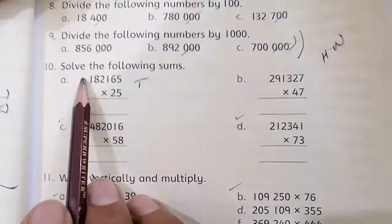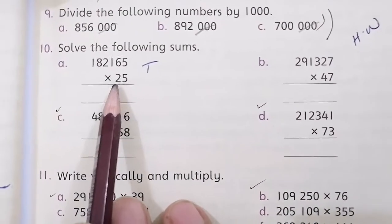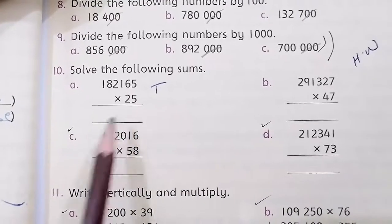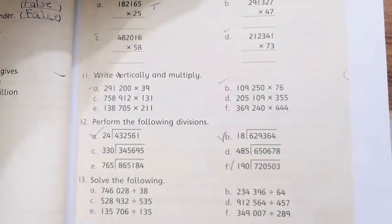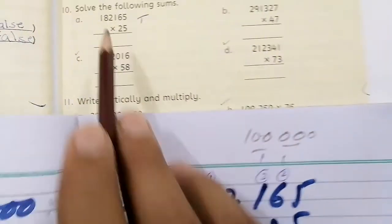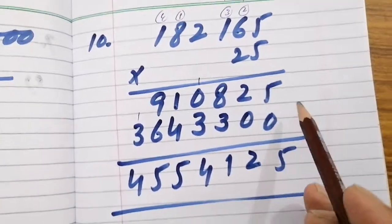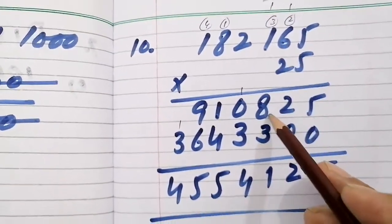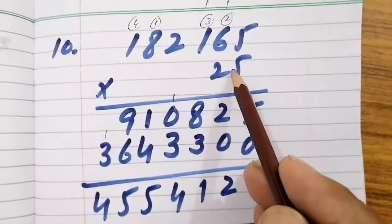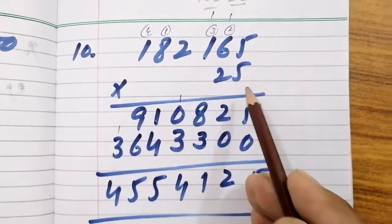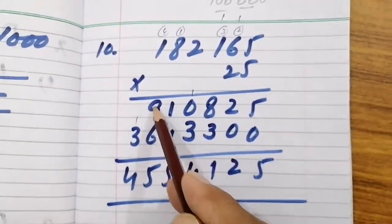Question number 10 is solve the following sums. I have already told you this multiplication method. If you have a question, I will do one part. We will do this. This is part A. 182165 multiply 25. 5 times 5 is 25. Carries, 5 times 6 is 30, 32. 3 times 5 is 15, 38. Then, 5 times 2 is 10. 1 carry, 5 times 8 is 40, 41. 1, 4 carry. 5 times 1 is 5, 4, 9.